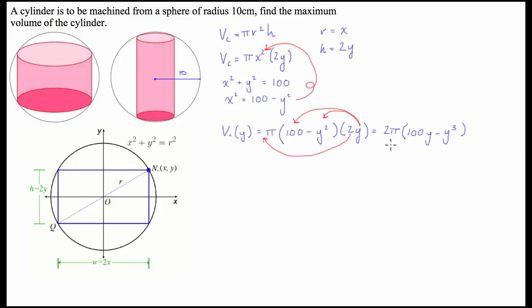So, what we do then is we're going to differentiate this function with respect to y. So, we're going to find dV/dy. It's a bit weird having the y on the bottom there, but that's going to be differentiating this function. And to differentiate this, we're going to keep that 2pi at the front. And we're going to have inside the bracket 100 minus 3y squared.